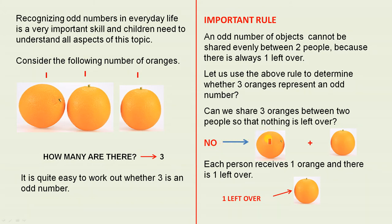One person gets one orange, another person gets another orange, and there is one left over. So each person receives one orange and there is one left over. Because there is one left over, three is odd.